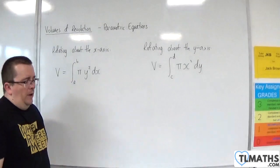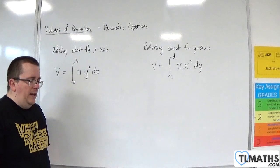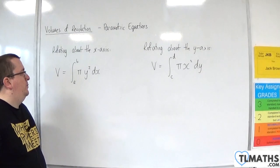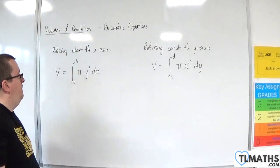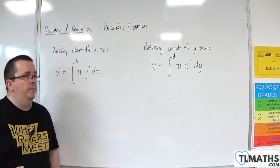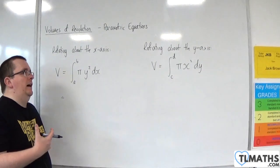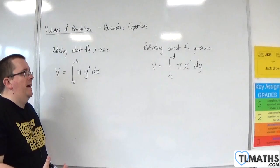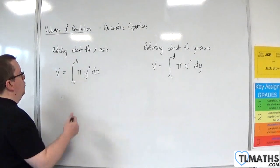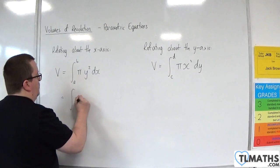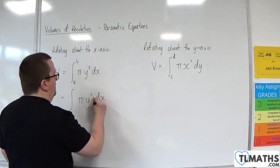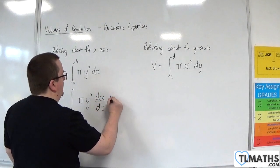So essentially what we do to introduce parametric equations here is to use a substitution, essentially. Now, that doesn't mean integration by substitution, but what I mean by that is it's the dx that I am going to replace here with the integral of pi y squared, and we're going to have dx by dt dt.